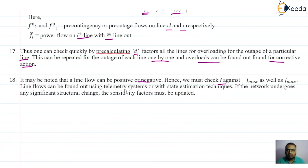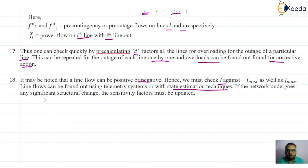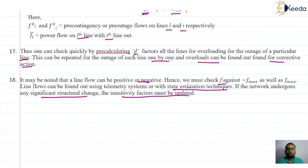Line flow can be found out using the telemetry system or with the state estimation technique. As discussed earlier in power system security, for monitoring the quantities of the power system we are either using telemetry or the state estimation technique. If the network undergoes any significant structural change, the sensitivity factors must be updated. This way, these two factors — the Generation Shift Factor and the Line Outage Distribution Factor — are helpful in selecting the contingencies.